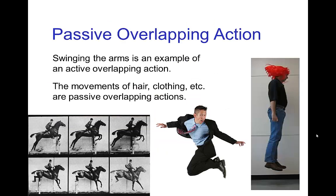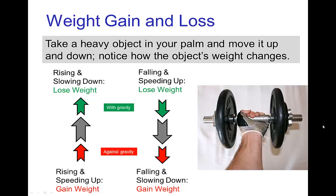Now, there's also passive overlapping actions, so any kind of motion of the hair, the clothing, with this horse, the mane of the horse, the tail, the clothing of the rider and so forth. So these passive overlapping actions in a jump are affected by the weight gain and loss in the motion.